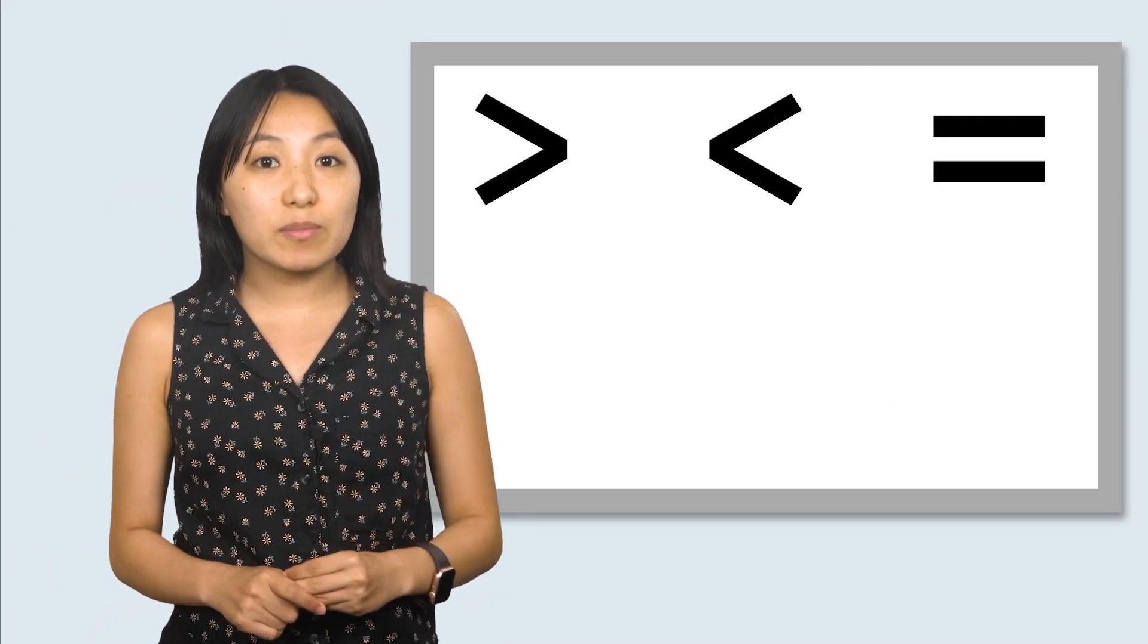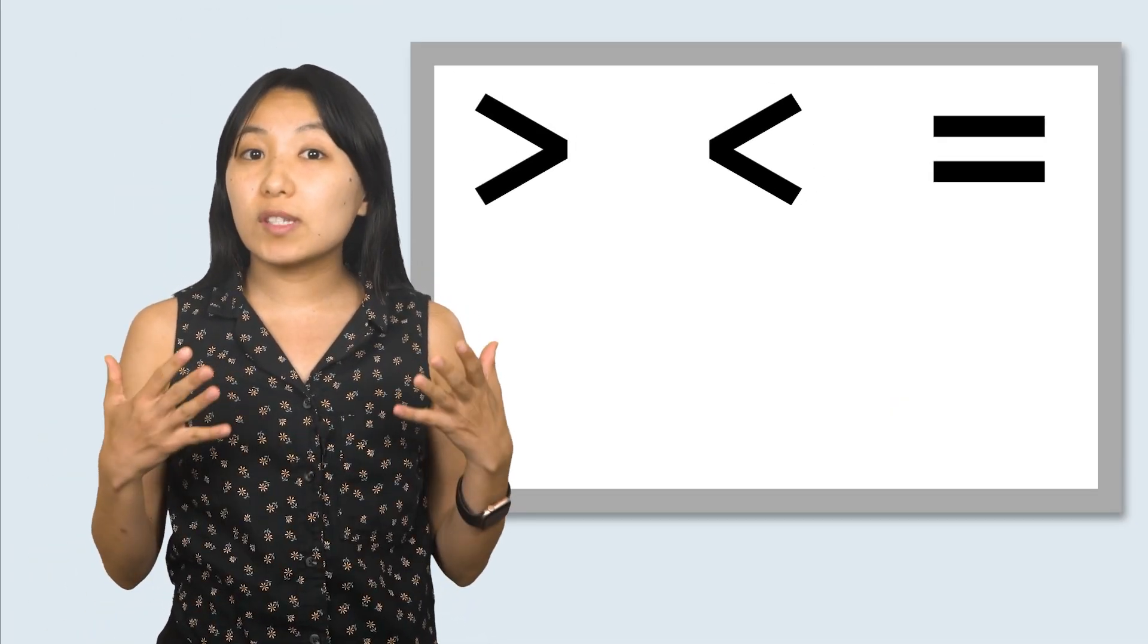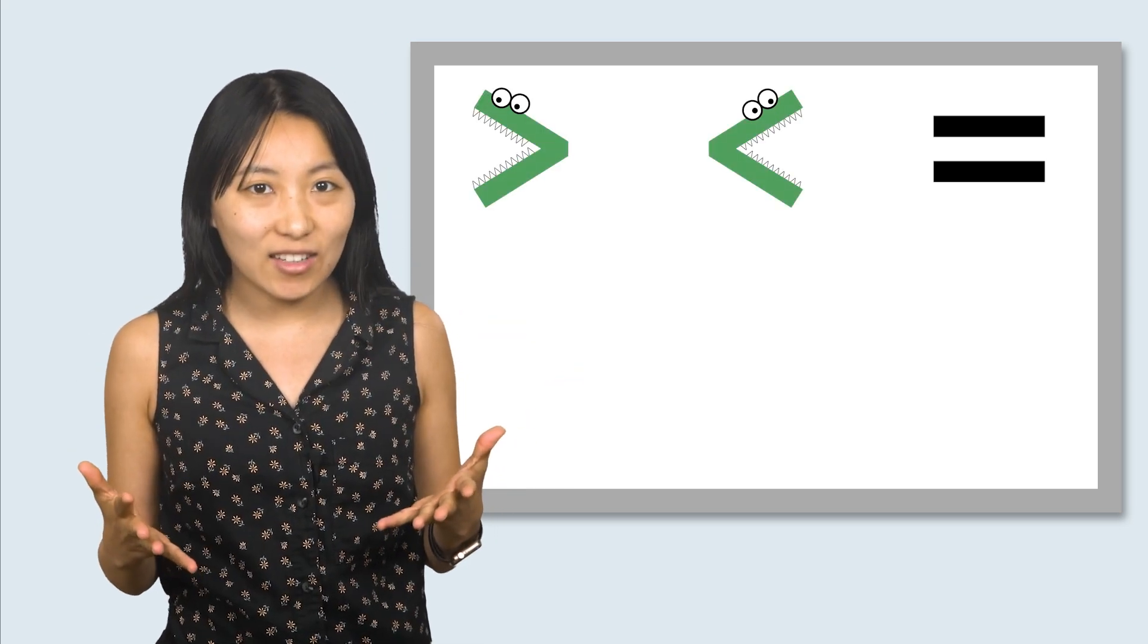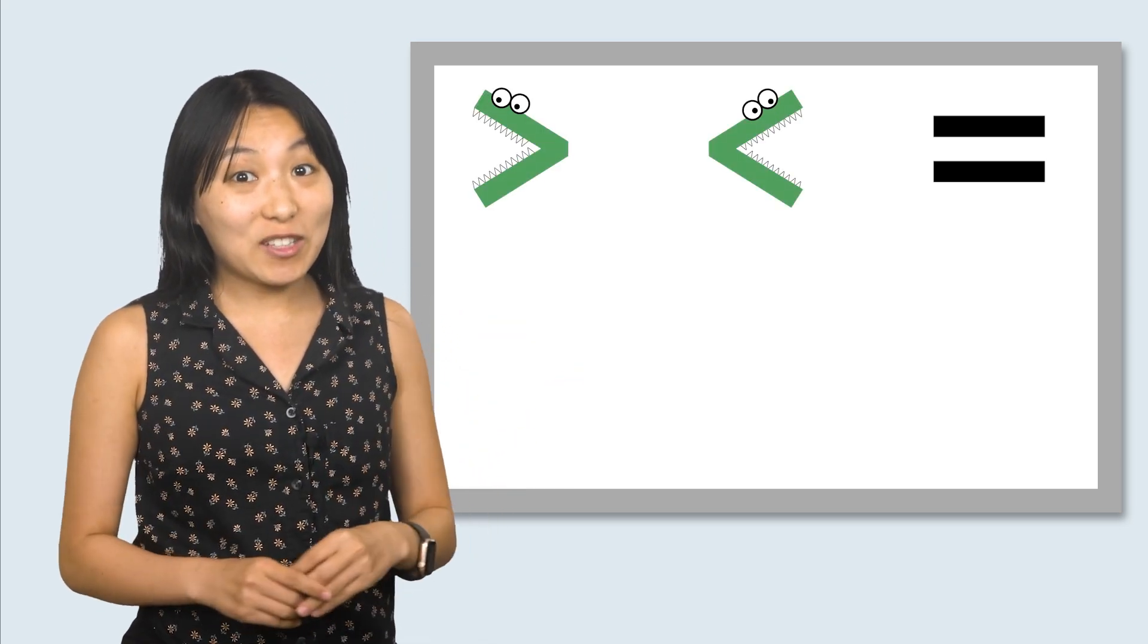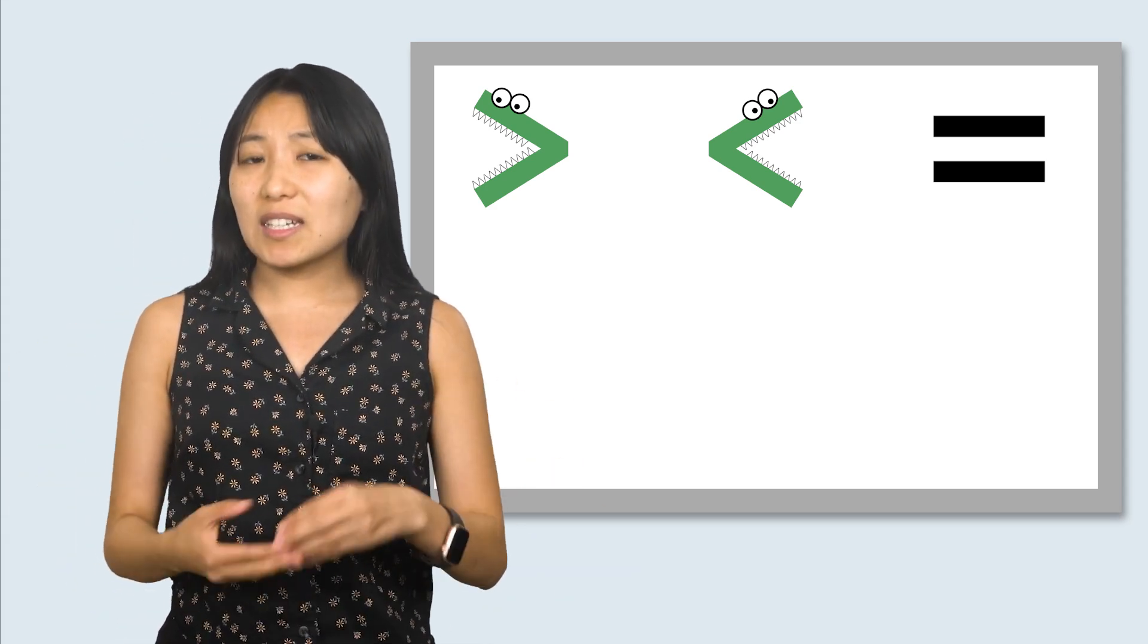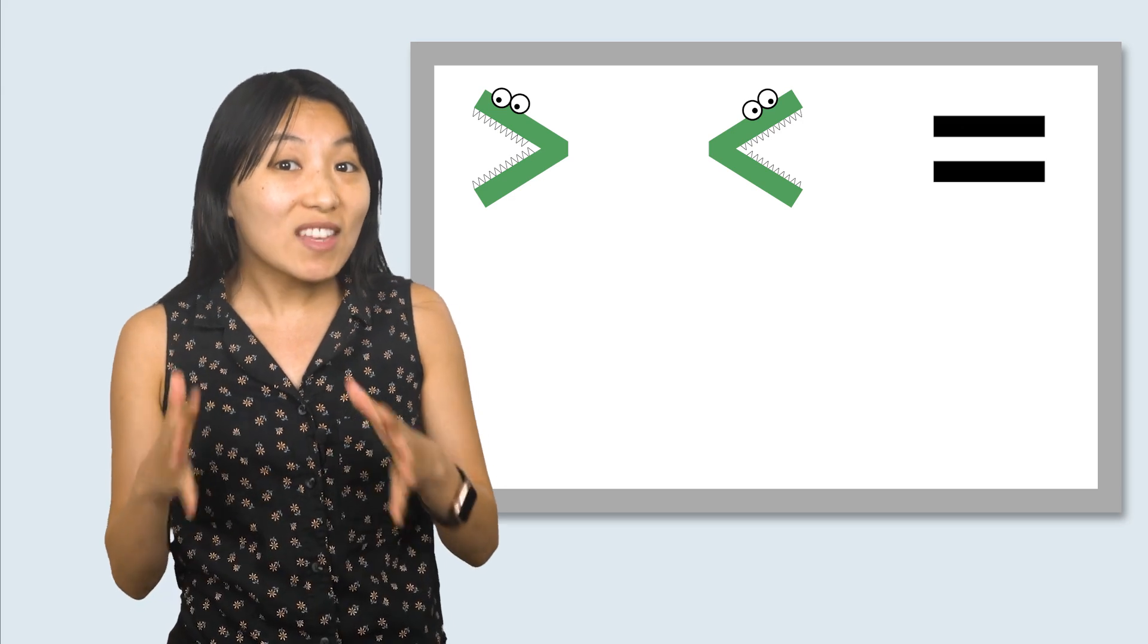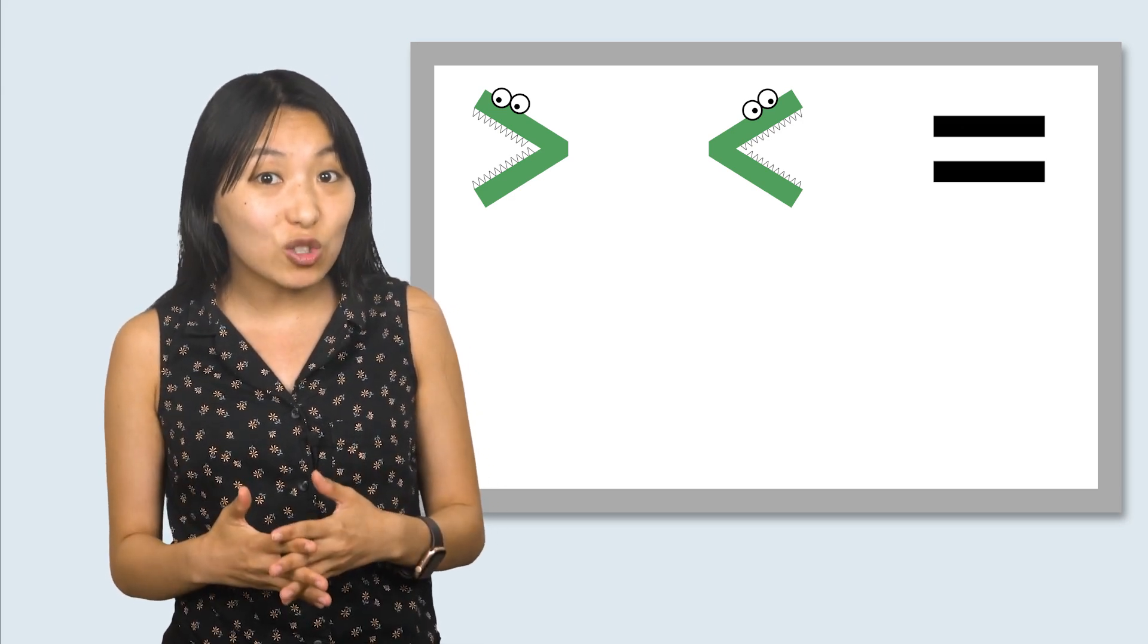Each of these math symbols means something different. We can think of these two symbols as hungry alligators. I don't know about you, but if I were a hungry alligator, I would always want to eat the bigger number. And that's exactly what these hungry alligators are going to do.